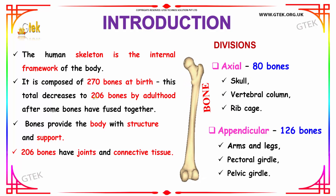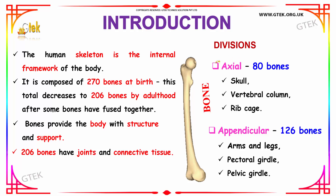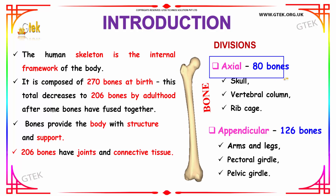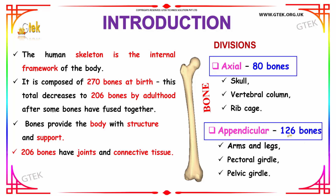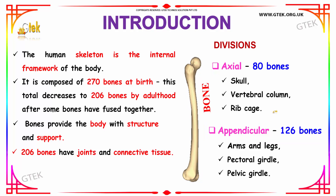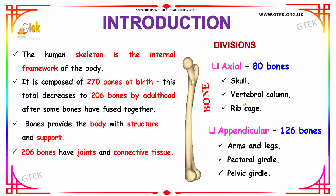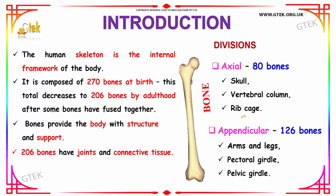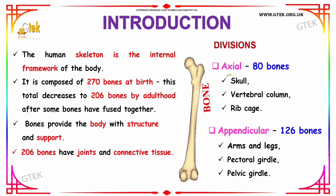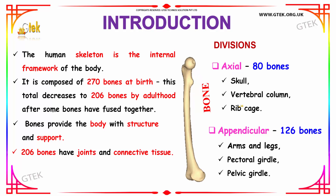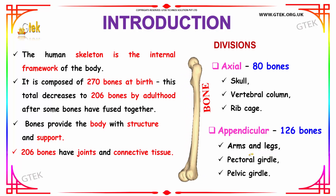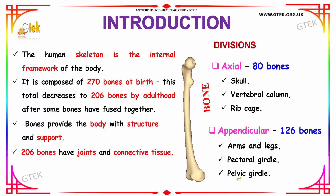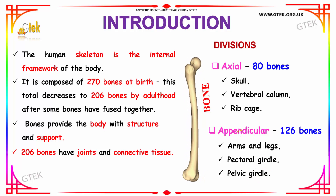The total 206 bones can be classified into two groups: axial bones and appendicular bones. We have a total of 80 axial bones and 126 appendicular bones. The skull, the vertebral column, and the rib cage form the axial bones, whereas the arms and legs, pectoral girdle, and pelvic girdle form the appendicular bones.